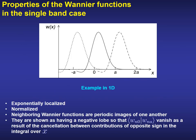All these properties can be visualized on this cartoon in a simple one-dimensional case. The unit cell lattice constant is defined by a lowercase a. We can see in this sketch how the Wannier functions are peaked on a particular unit cell in real space, how they are normalized and exponentially localized, and how neighboring Wannier functions are periodic images of one another. They also show a negative lobe so that the scalar product between neighboring Wannier functions vanishes due to the cancellation between contributions of opposite sign in the integral over x.